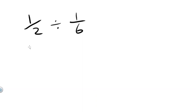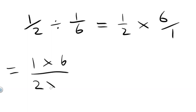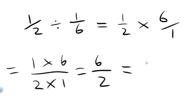Let's try another one. 1 half divided by 1 sixth. Using the same method, instead of dividing by 1 sixth, we multiply by the reciprocal, so 6 over 1. So 1 half divided by 1 sixth equals 1 half multiplied by 6 over 1. Multiplying those two terms together, we multiply the tops together: 1 times 6, over the bottoms multiplied together, 2 times 1. 1 times 6 equals 6, and 2 times 1 equals 2. 6 over 2 is the same thing as 6 divided by 2, which equals 3. That's our answer.